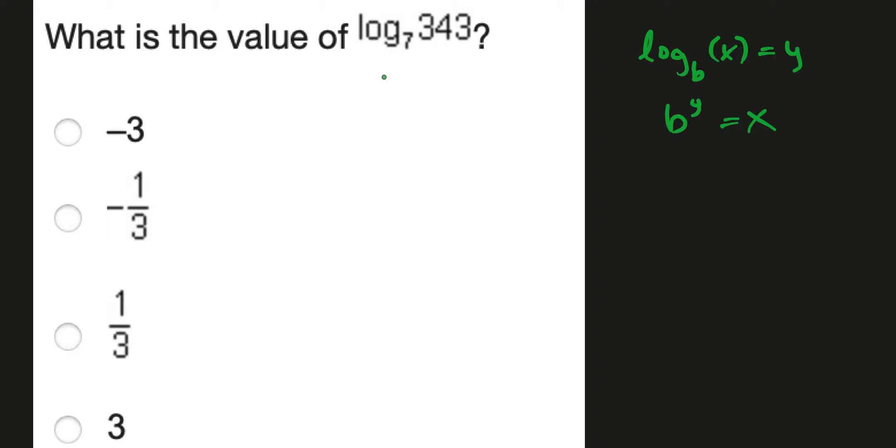Knowing this is helpful because now we can rewrite this. So this is in the form log base b of x equals y. Log base 7 of 343 equals y. That means 7 to the y equals 343.